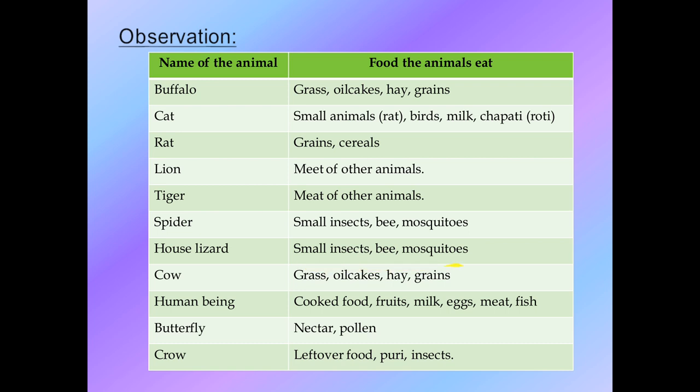Cow is the same as buffalo - grass, oil cakes, hay, and grains. Human beings eat cooked food which includes both plants and animals - fruits, milk, eggs, meat, fish, and vegetables. All of these come under human beings' food.